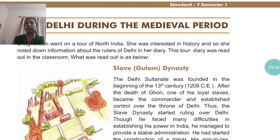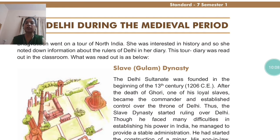India was attacked by many Arab invasions. Those who were slaves in the Arab countries, they ruled over India. The Delhi Sultanate saw the first slave of the Ghulam dynasty, which was founded in the beginning of the 13th century. After the death of Ghori, one of his loyal slaves became the commander and established control over the throne of Delhi. Thus, the slave dynasty started ruling over Delhi.